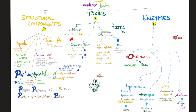As for the toxins: we have cytotoxins; exfoliative toxins, which can lead to staph scalded skin syndrome (SSSS); enterotoxins that can lead to watery diarrhea and food poisoning, especially after eating contaminated potato salad, ham, banana pudding, ice cream, or pastries; and toxic shock syndrome toxin number one, which causes toxic shock syndrome. These diseases are not caused by the Staph aureus bacteria itself — they are caused by its toxins — so these are intoxications rather than true infections.